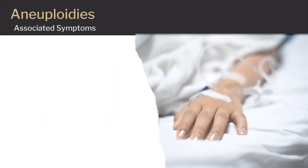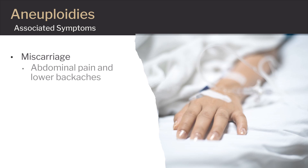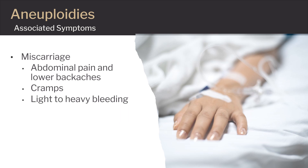The most common symptom of aneuploidy is a miscarriage, which is when a pregnancy ends early. A miscarriage will usually occur during the first three months of pregnancy but can happen at any time. Symptoms of a miscarriage include abdominal pain and lower back aches, cramps, and light to heavy bleeding. Although 50% of pregnancy losses are due to genetic abnormalities like aneuploidy, it is possible to have a baby born with an aneuploidy diagnosis. Babies with aneuploidy are much more likely to have birth defects and face developmental delays and intellectual disabilities.